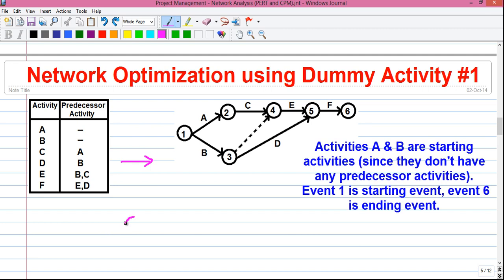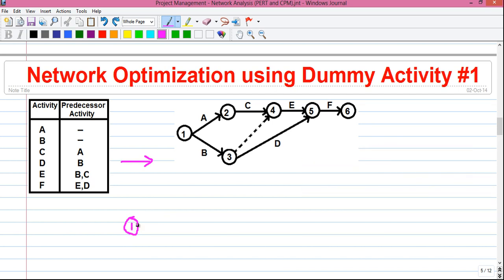So first, we will draw a circle which represents an event. Let us give it a number, let's say 1. So next, we will draw two activities, activity A and activity B. Activities are represented using arrows and the end of the activity also represented by an event. So end of activity A is represented by another event. Let us say it is event 2 and end of activity B is represented by event 3.